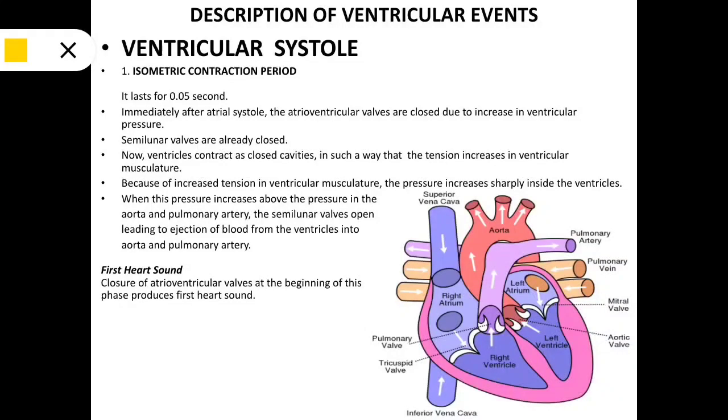In the first part of the video we discussed the atrial events. Now we will discuss the ventricular events. Ventricular systole: The first event of ventricular systole is the isometric contraction period. It lasts for about 0.05 seconds.